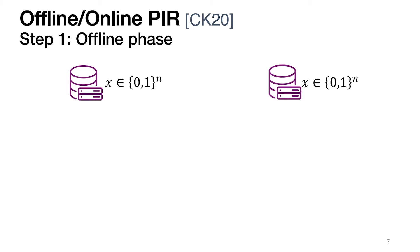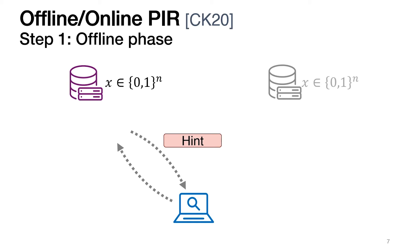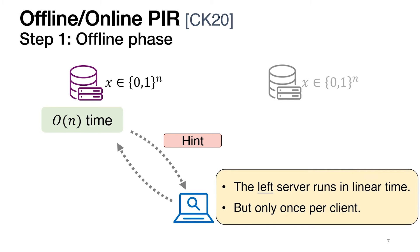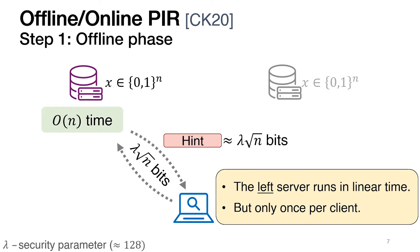To make PIR more efficient, in our previous work we introduced a new type of PIR protocols called offline-online PIR. Such a protocol begins by the client talking to one of the servers and obtaining a piece of information about the database, which we call the hint. Even though generating this hint takes the server time linear in the database size, the server only needs to generate this hint once per client, after which the client can issue multiple queries using the same hint. Crucially, the communication of the offline phase — that is, the size of the hint — is sublinear in the database size, and in our protocol is about λ times √N, which is much more efficient than downloading the entire database. Here λ is the security parameter, say 128. The client can then use this hint to privately read from the database.